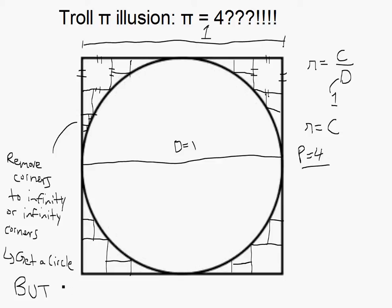But, perimeter still equals 4. So, then that's the circumference. So, then we get C is 4, and we get pi equals to 4.